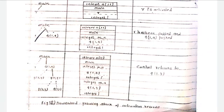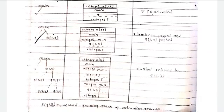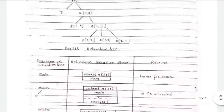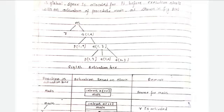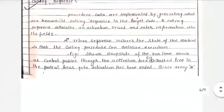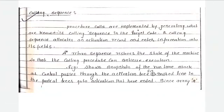Thus, in this way, we described the things related to calling sequence. The dashed line shows how these things are related to the calling sequence. Calling sequence is the procedure calling sequence — how the activation tree is shown and what kind of position is stored in memory. This can be shown with the help of calling sequence. Thank you.